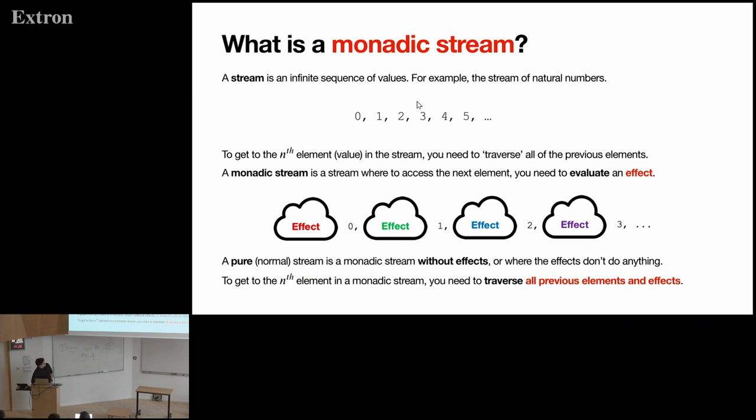So, first question, what's a monadic stream or a monster for short? A stream is just a sequence of pure elements that goes on forever. So here's a stream of natural numbers. A monadic stream, or monster for short, is a stream where traversing to the next element evaluates some kind of effect. This effect might modify the element that you get back. It could give you no element, different elements, or multiple elements depending on what the effect is and how it's evaluated. And we model these effects with monads, basically. So, before looking at some examples, I first want to define monsters formally.